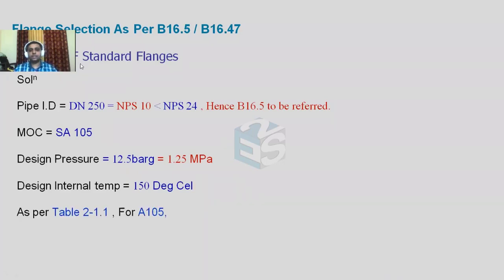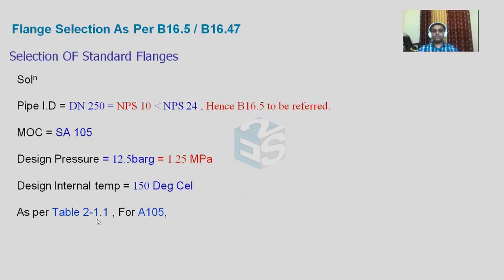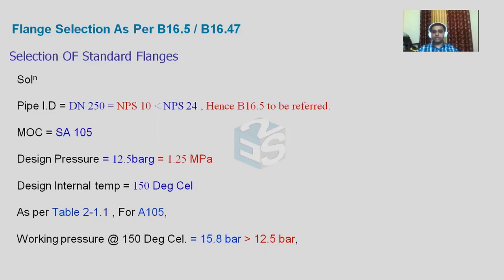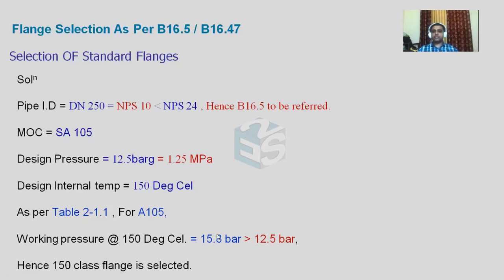As per table 2-1.1 for material group 1.1 — applicable to A105 — the working pressure at 150 degrees Celsius is 15.8 bar, which is more than our design pressure of 12.5 bar. The design pressure should be inclusive of all static head contributions. After adding the basic design pressure plus static head, if that value is 12.5 bar, the 150 class rating of 15.8 bar is sufficient.